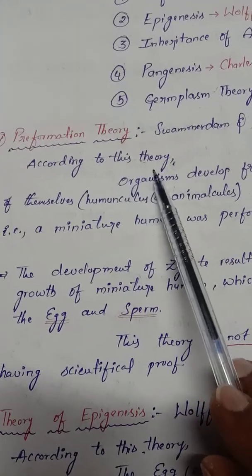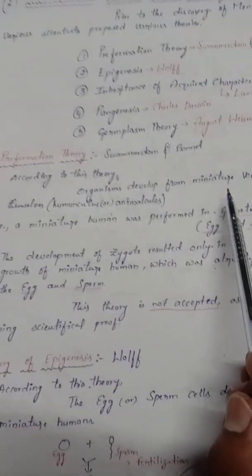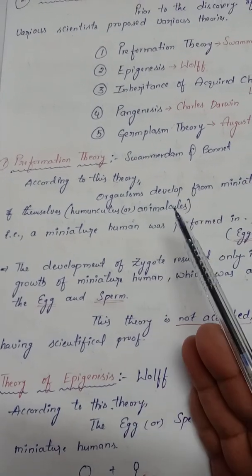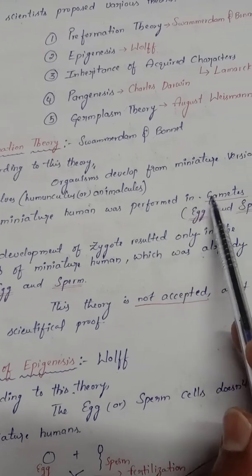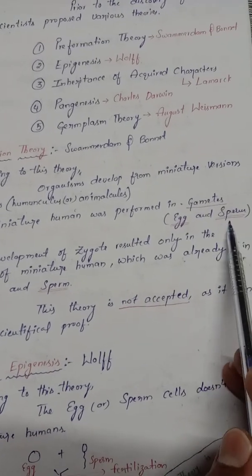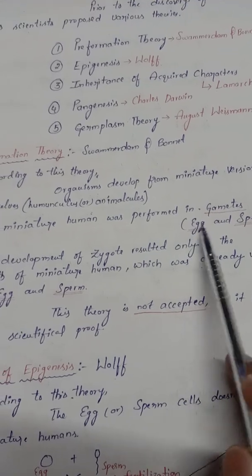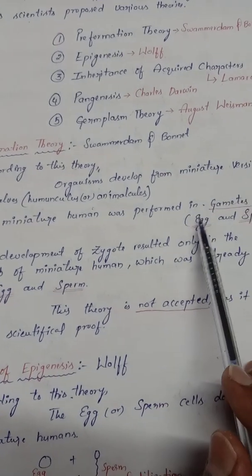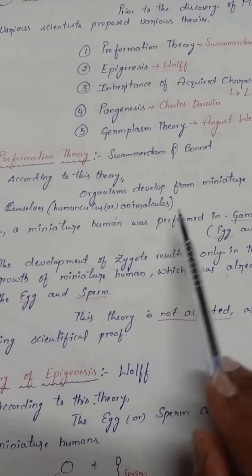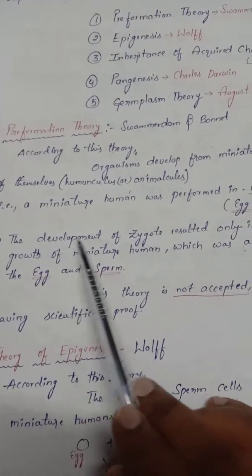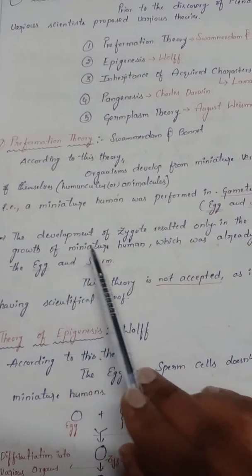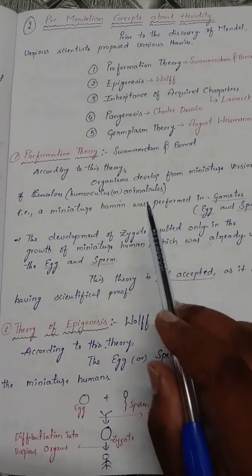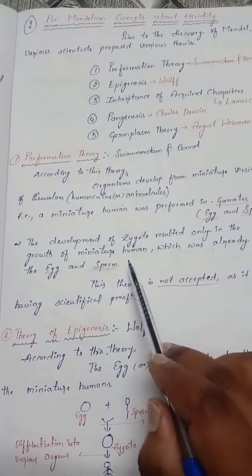According to preformation theory, organisms developed from miniature versions of themselves. That means a miniature human was pre-formed in gametes — in male gametes (sperm) or female gametes (egg). A small-sized human being is already present in these gametes and they develop into humans. The development of the zygote resulted only in the growth of this miniature human already present in the egg and sperm.